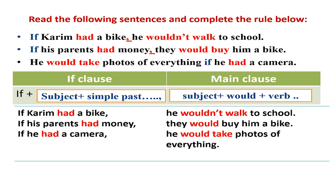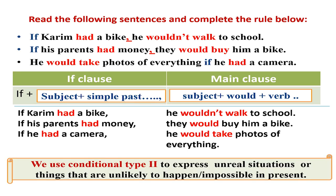When do we use conditional type 2? If Karim had a bike — does Karim have a bike? No, he doesn't. Does he walk to school? Yes. So 'if he had a bike, he wouldn't walk to school.' We are imagining an unreal situation. We use conditional type 2 to express an unreal situation — the opposite of reality, or things that are unlikely or impossible in the present.